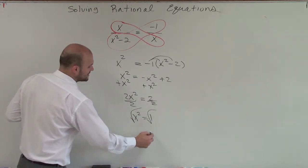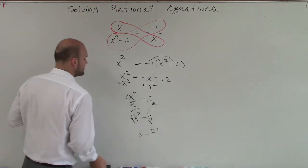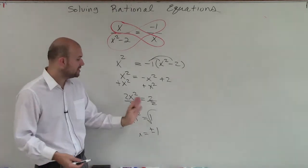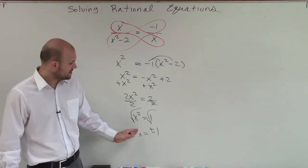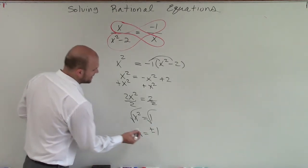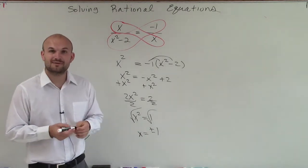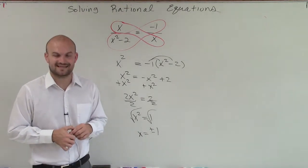So therefore, x equals plus or minus 1. Because remember, when we introduce the square root, we have to make sure we include the positive and the negative value of our square root. So there you go, ladies and gentlemen. That's how you solve a proportion. Thanks.